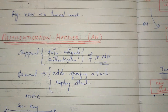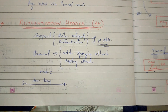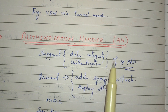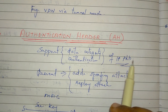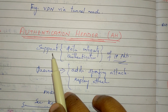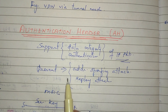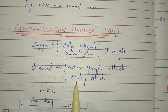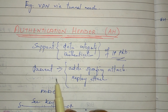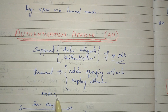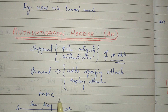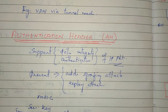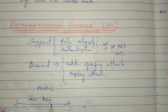Our authentication header provides data integrity and authentication. The IP packets receive integrity and authentication support. It protects against attacks — address spoofing attack and reply attack — using MAC, the message authentication code. The source and destination share a secret key.